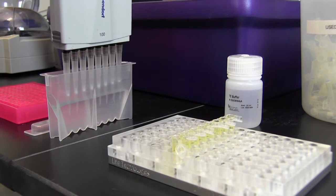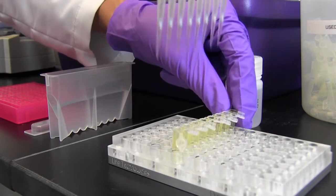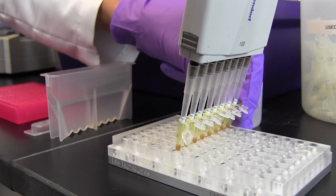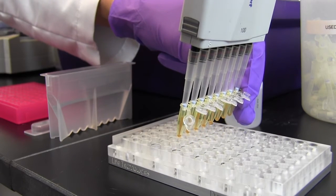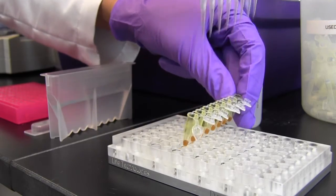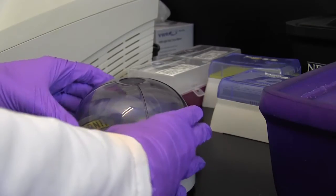Remove the tube or plate containing the dried bead pellet from the magnet and elute the library from the beads by adding 17 microliters of Tris hydrochloride or 0.1X TE buffer followed by mixing well by pipetting up and down or vortexing. A quick spin may be required to collect the liquid to the bottom of the tube or plate.